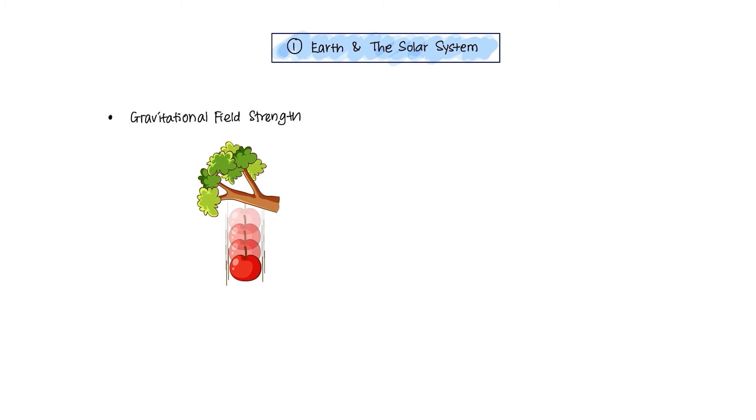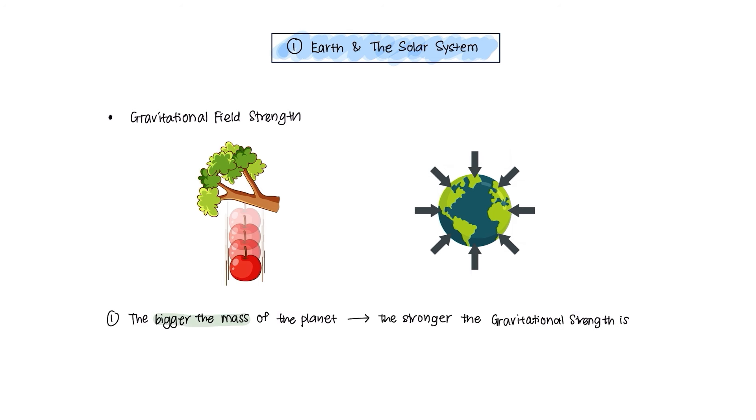Gravitational Field Strength. Objects are attracted towards the center of the Earth due to its gravitational field strength. In simple words, it's the force that attracts you to the core of the planet. Therefore, the bigger the mass of the planet, the stronger the gravitational strength is. And as you move further away from the planet, the gravitational strength gets weaker.